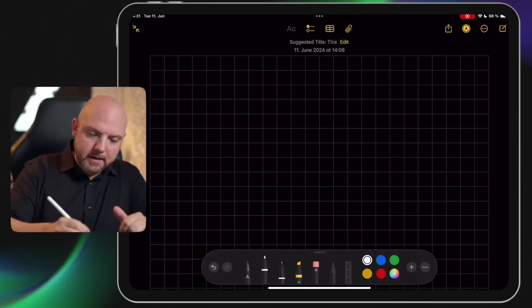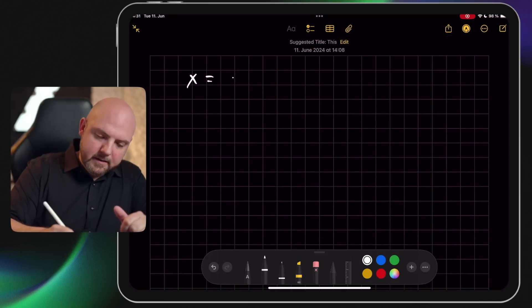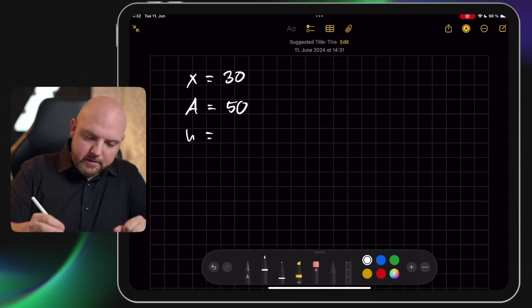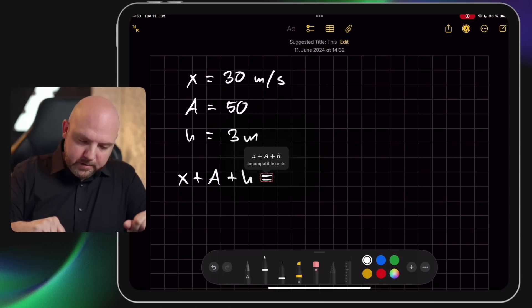Let's do something here. So let's say X equals 30, A equals 50, H equals 3 meters, meter per second. Well it doesn't matter. So now let's see what happens if I calculate all these together. Incompatible units.